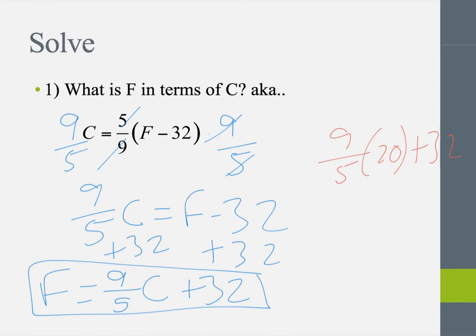Well, 20 divided by 5 gives me 4. So that's like 9 times 4 plus 32. Well, that's 36 plus 32. Woo! 68.